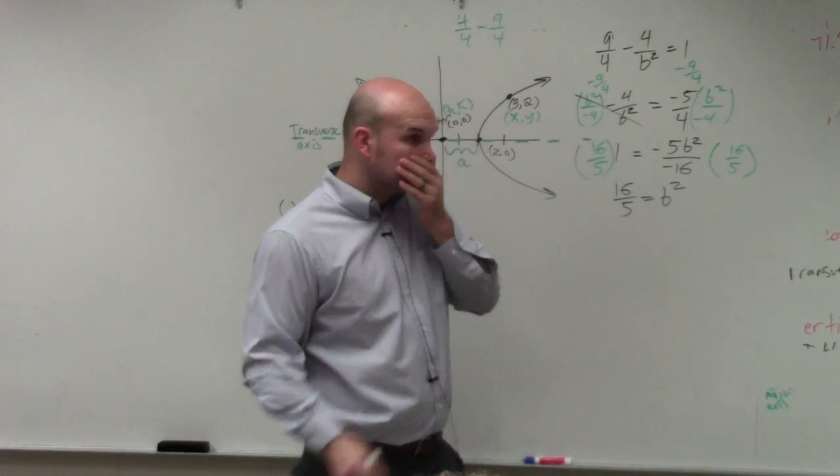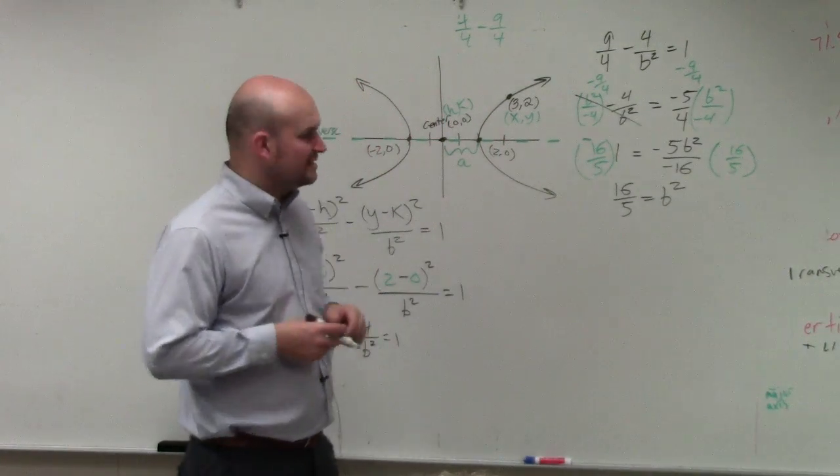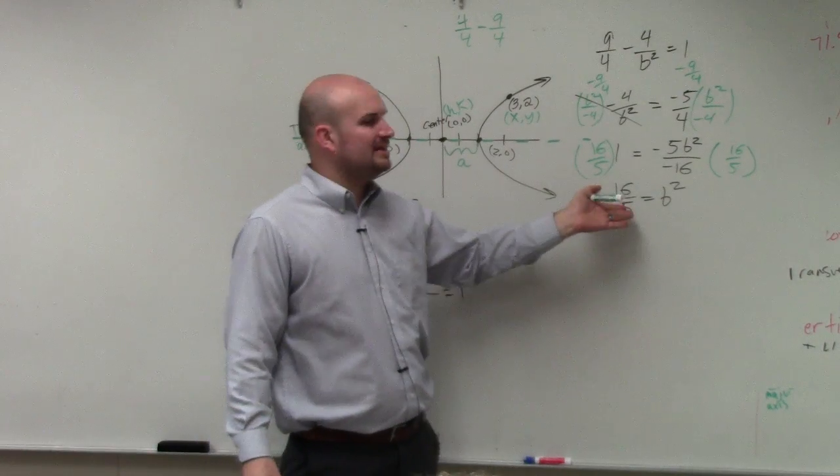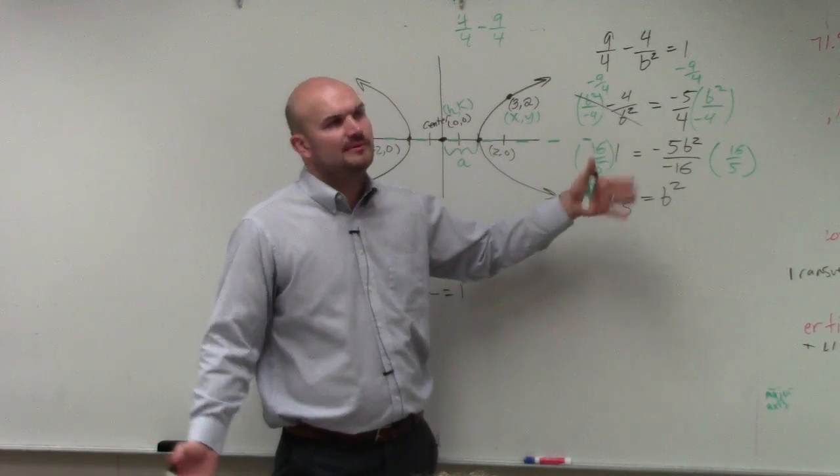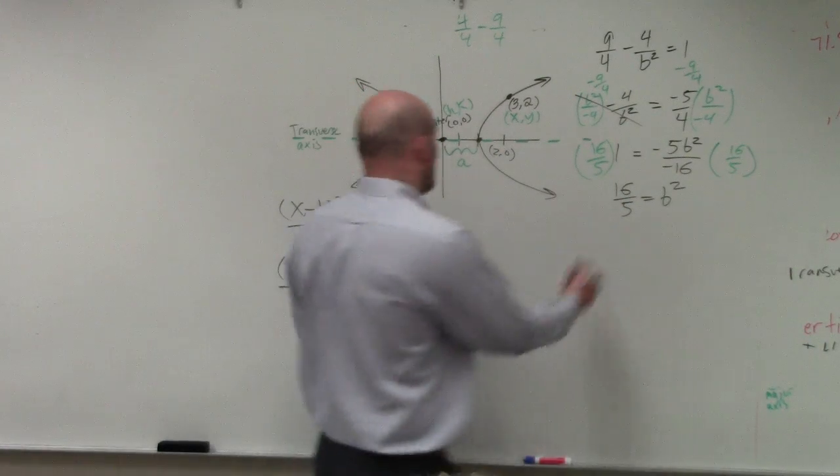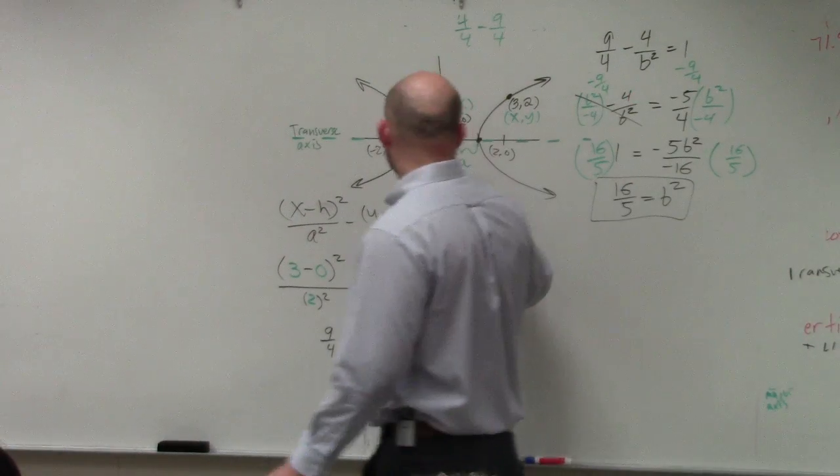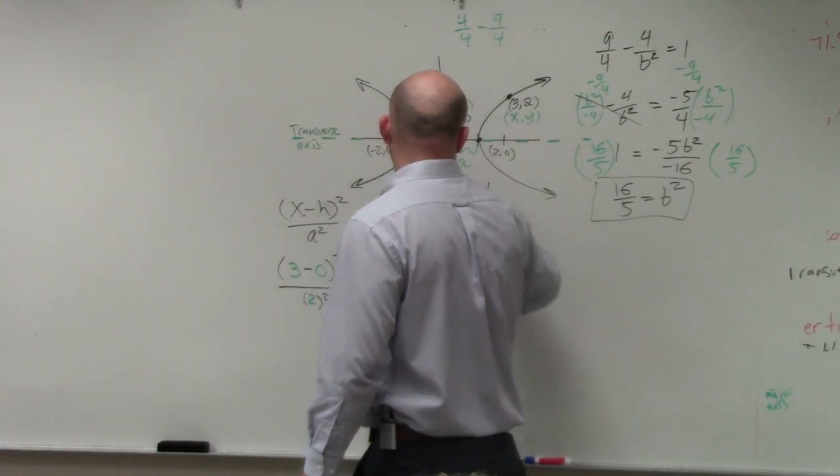Then we've got to solve. Oh, and that's b squared right there. OK. I don't think you guys are going to have one this difficult. It'd be nice if b squared, which is 16. But let me show you what to do when you do have a fraction. So now, I know what b squared is. And I know what a squared is. Right?